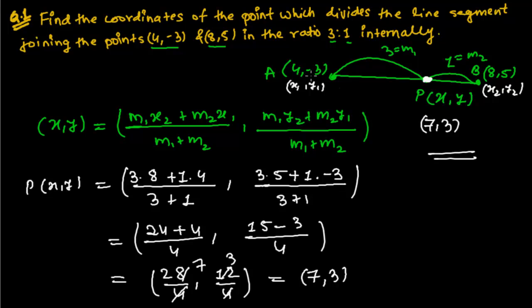The two points are (4, -3) and B(8, 5). This is the required point, that is (7, 3). This point is inside this AB line, that's why this section is called internal section. That is why it is written here internally, means the point should be inside that line.